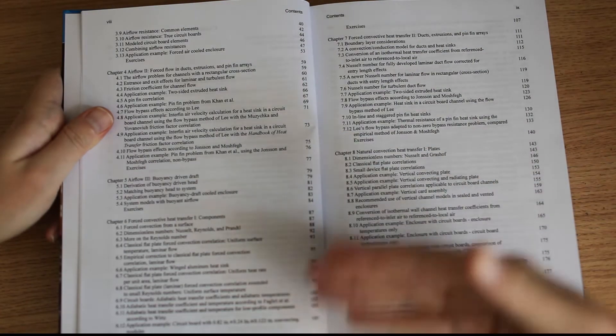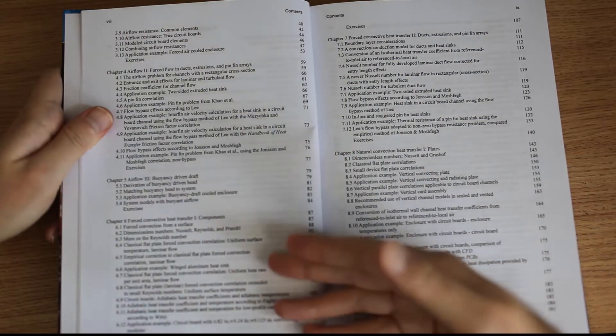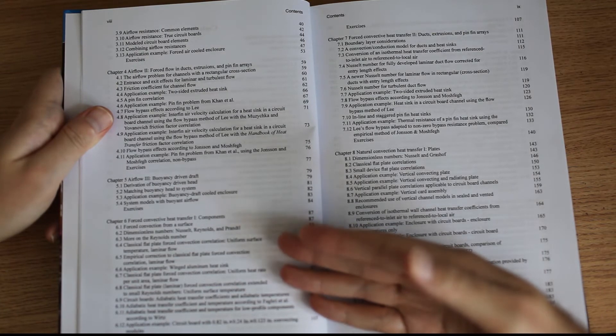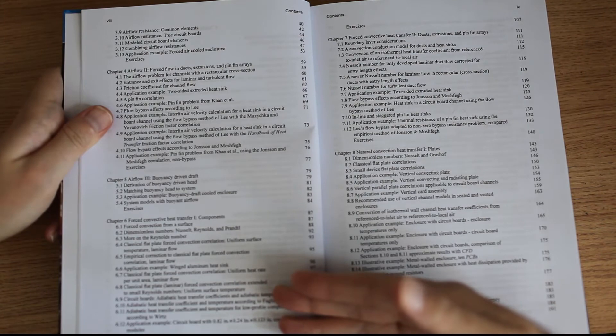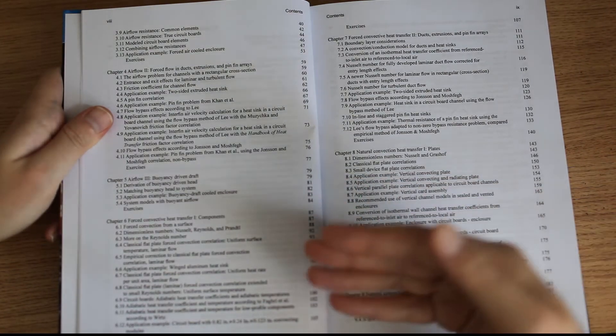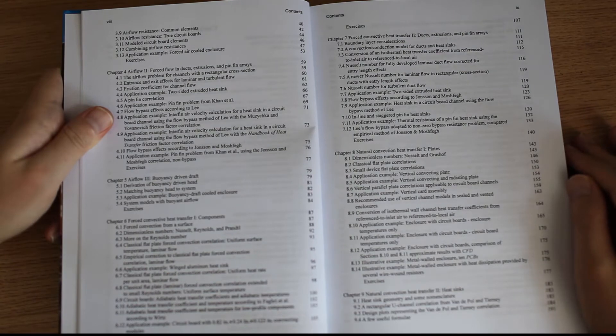And then it goes to force convective heat transfer, again, in different kinds of components. It talks about the dimensionless numbers: the Nusselt, the Reynolds, the Prandtl, all this.